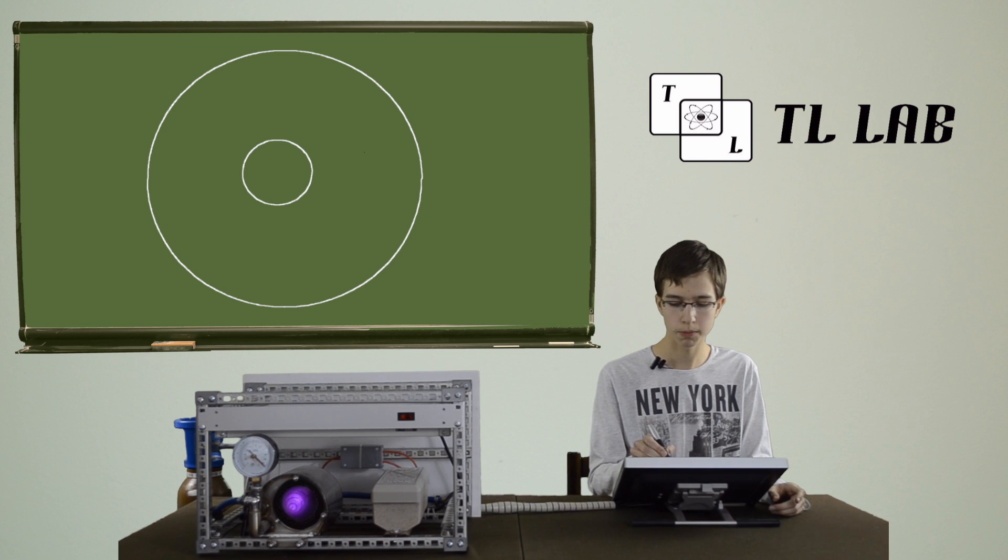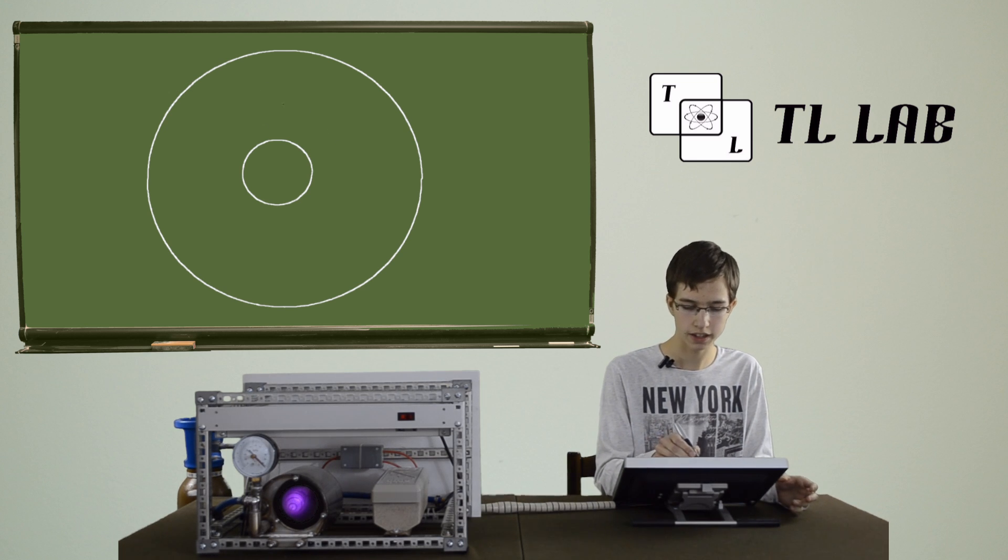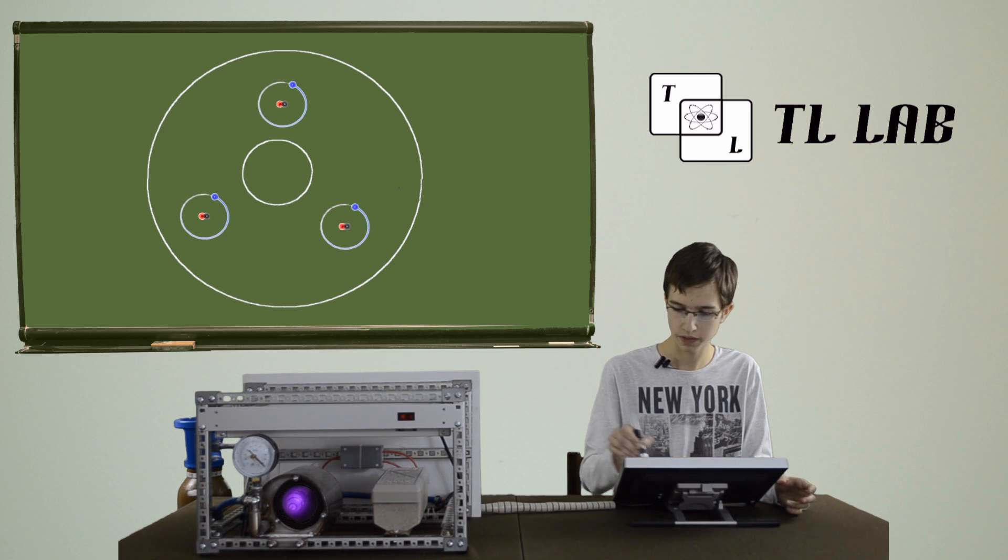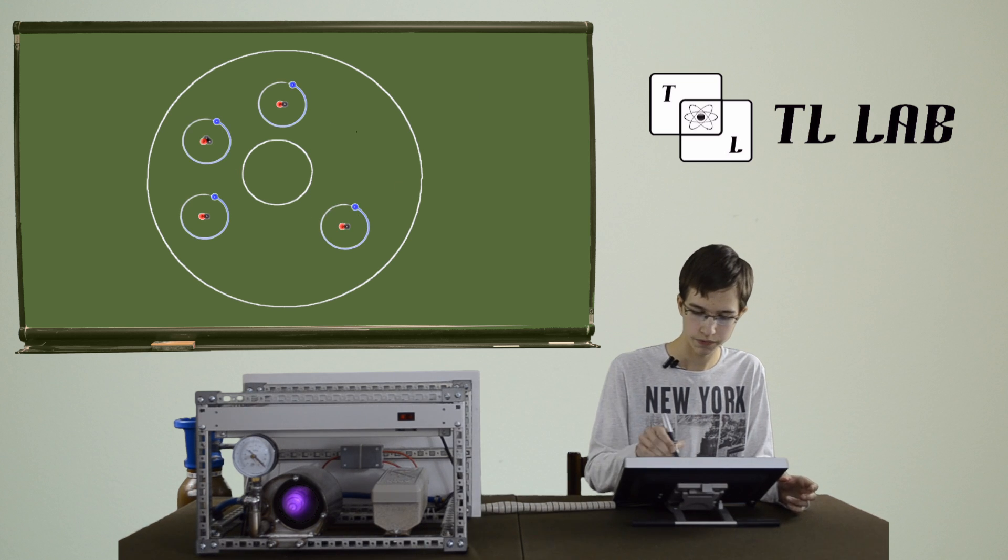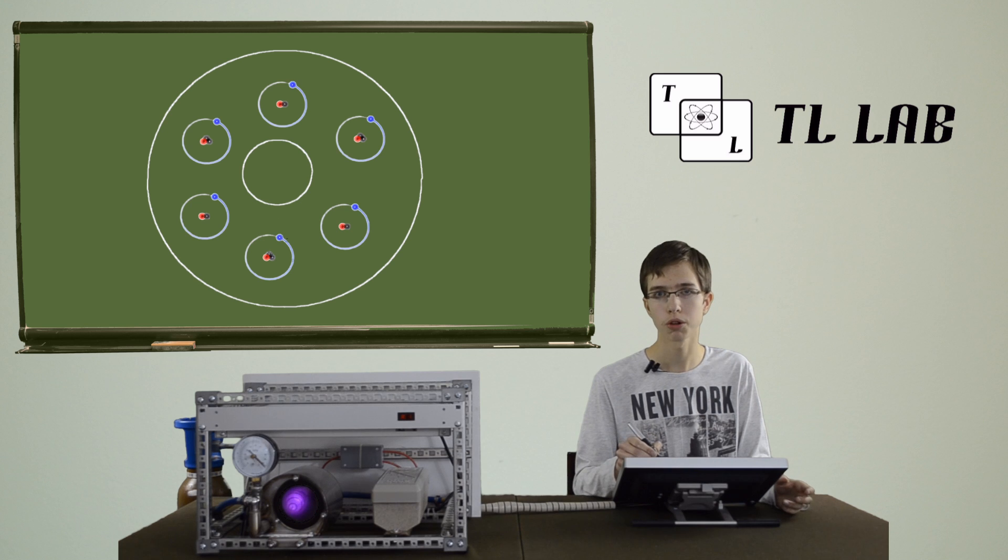Now we bring some gas into the fuser. In our case, those gases are deuterium and tritium, which are isotopes of hydrogen.